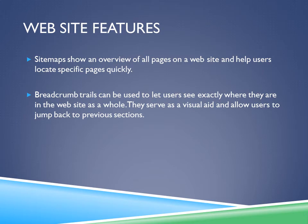Website Features. Site maps show an overview of all pages on a website and help users locate specific pages quickly. An effective site should have a good balance between the number of links on any page (the breadth) and the number of links needed to reach a given page (the depth). Breadcrumb trails let users see exactly where they are on the website and allow them to jump back to previous sections.